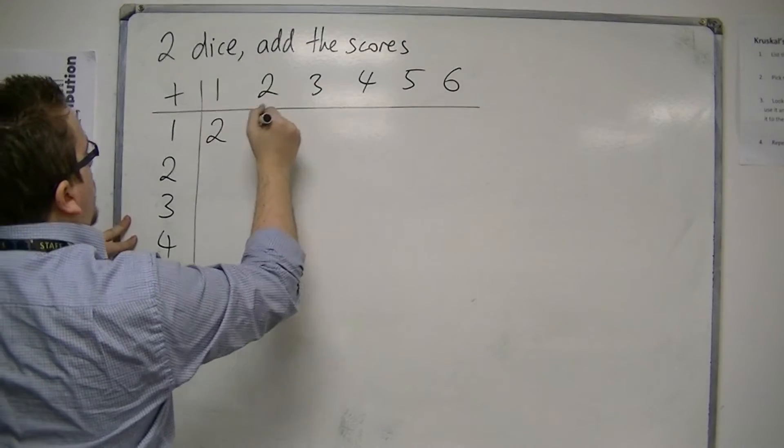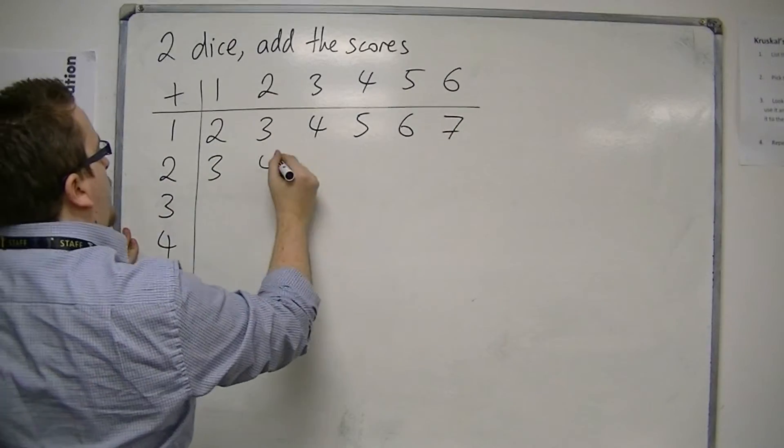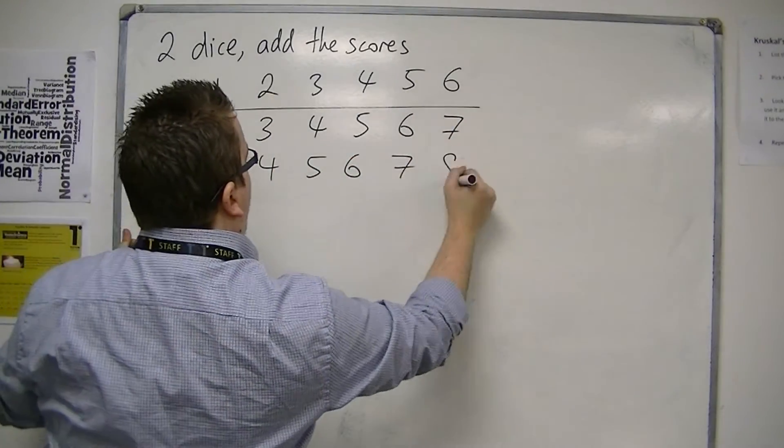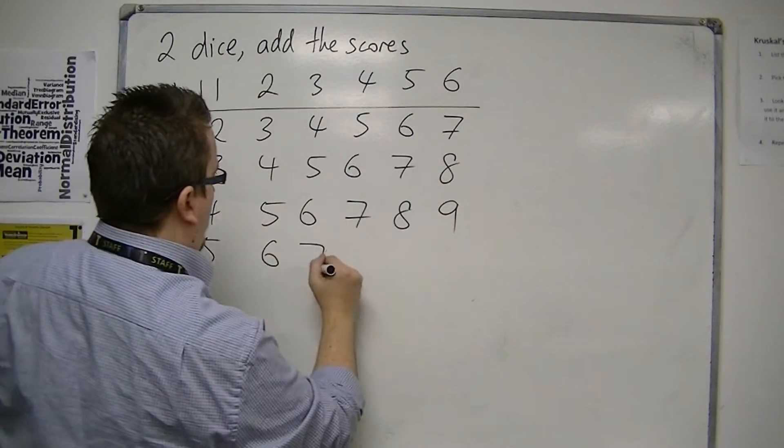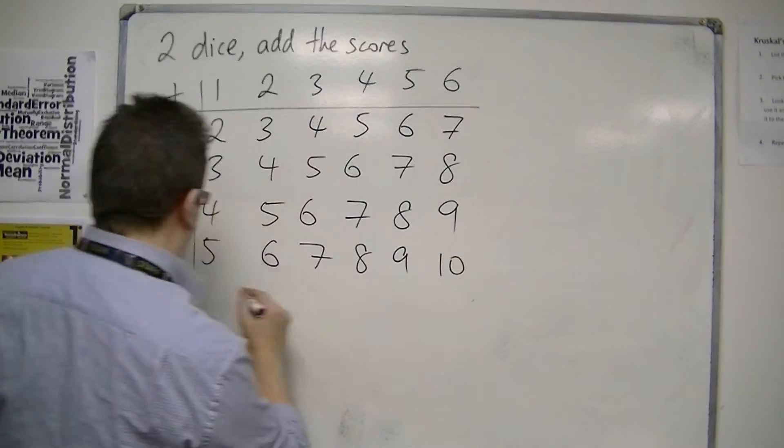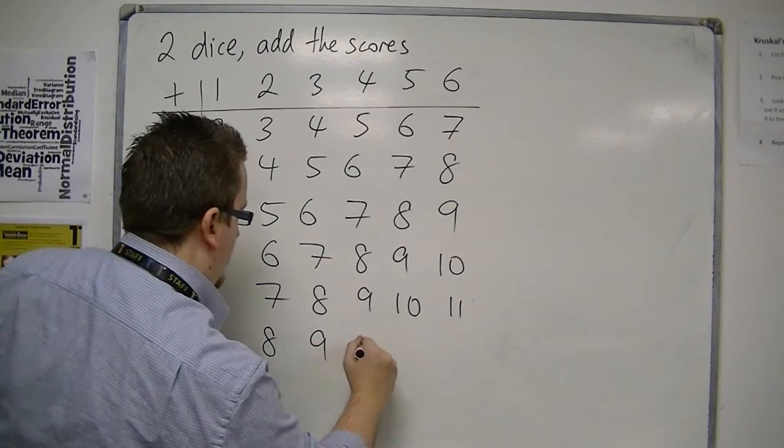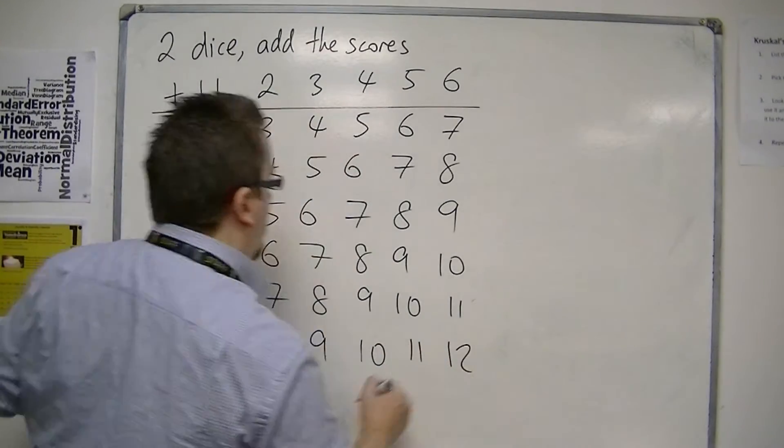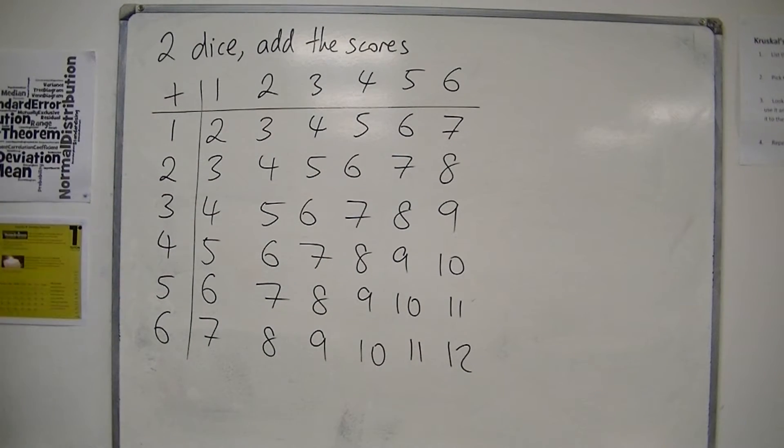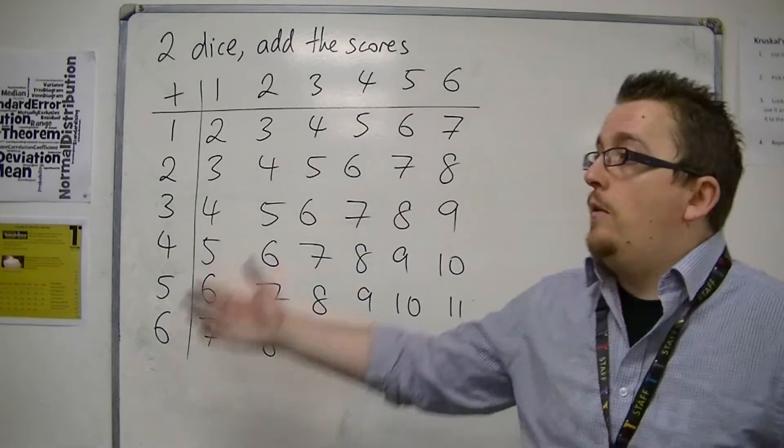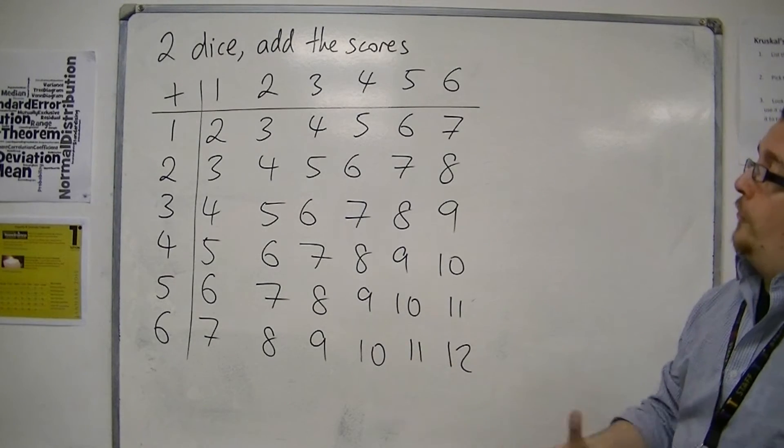We have one plus one is two, then one plus two is three, then four, five, six, seven. Three, four, five, six, seven, eight. Four, five, six, seven, eight, nine. Five, six, seven, eight, nine, ten. Six, seven, eight, nine, ten, eleven, and twelve. So if you roll a six and a six, you get twelve. This would be the sample space of rolling two fair dice and adding the scores together.